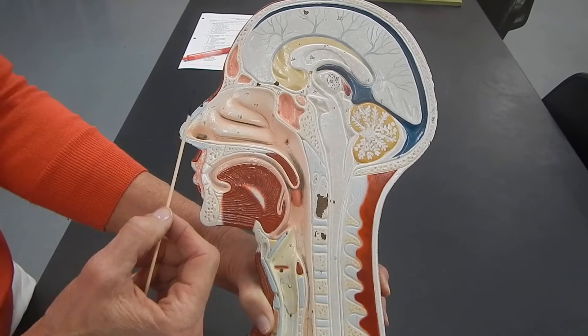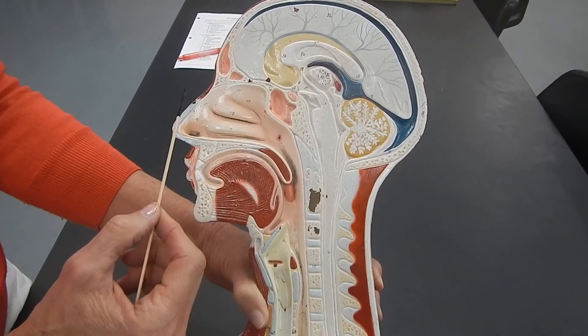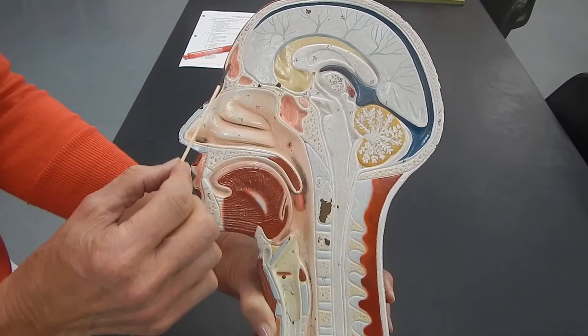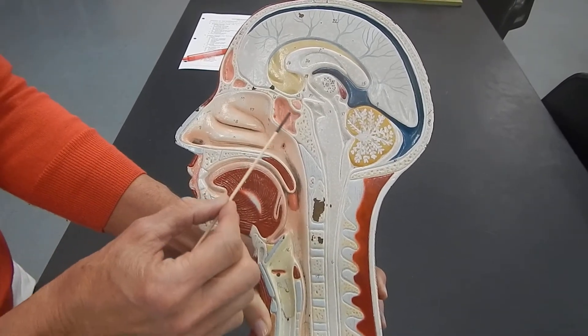In the skull, there are air-filled spaces that are called sinuses. This is the frontal sinus, and this is the sphenoidal sinus.